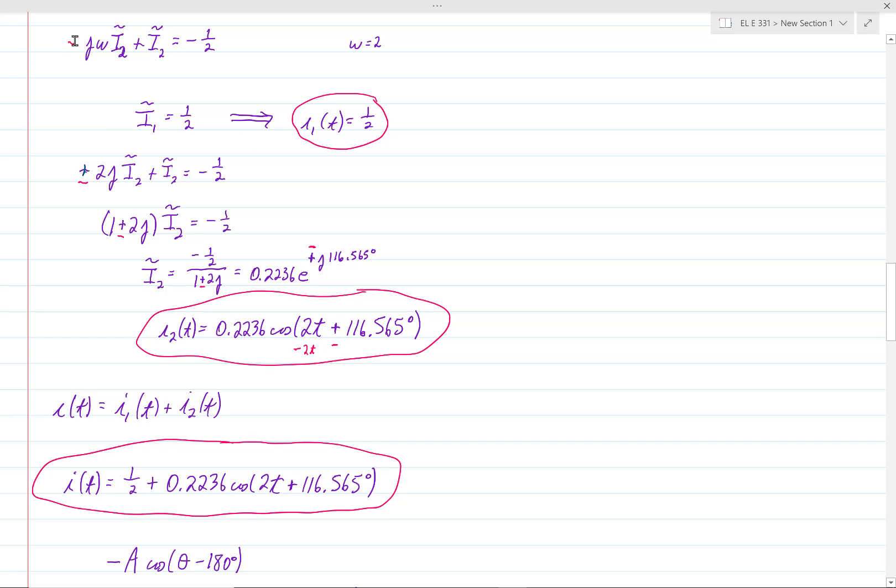But the second equation, the negative sign in that second equation, would make a difference because there, omega is equal to 2. And so instead of getting positive 2j times i2 tilde here, you would get negative 2j times i2 tilde. Now the rest of the equation would be the same.